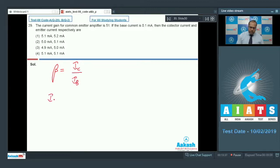So the value of IC is equal to beta which is 51 into the value of IB that is 0.1 mA. So if I solve this, it comes out to be 5.1 mA. Now the emitter current IE is equal to IC that is 5.1 plus IB, 0.1. So it comes out to be 5.2 mA. So option 1 is the correct answer.